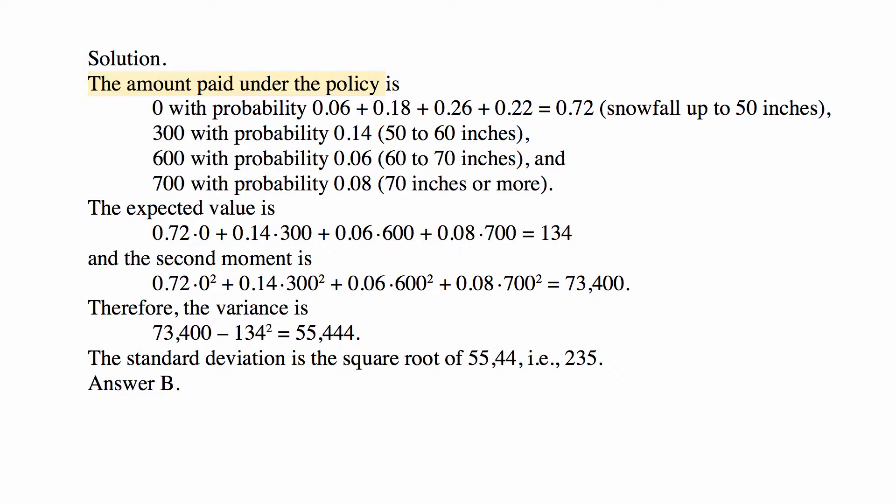The second moment is the same amounts but now squared, multiplied by the same probabilities, and that ends up being 73,400. The variance is the second moment minus the square of the first moment, and that's 55,444. The square root of that is the standard deviation we're looking for, and that's 235 — that's answer B.